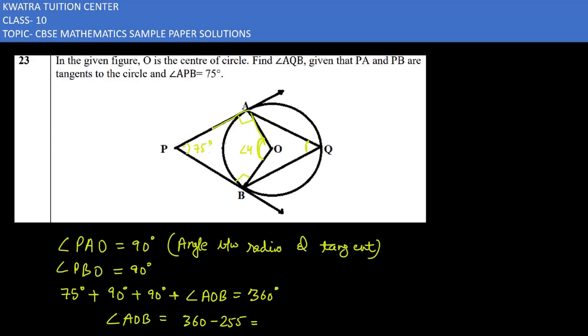It will give you a value of 105 degrees. Now we have an angle sum property. We have an angle AOB which is 105, and we have AQB. We have to find angle AQB.